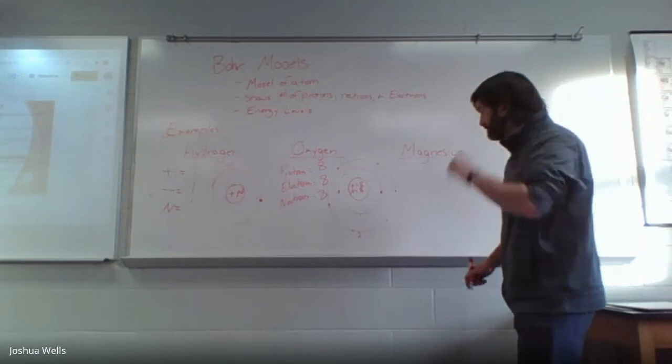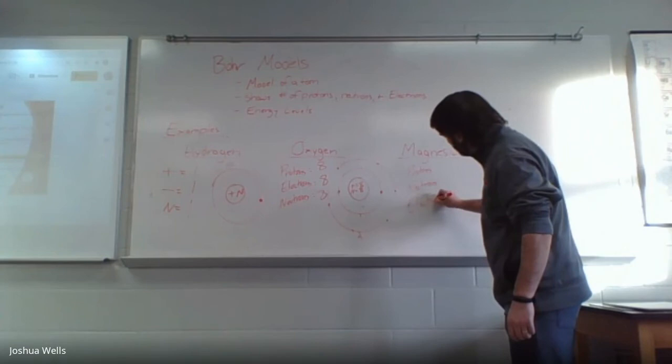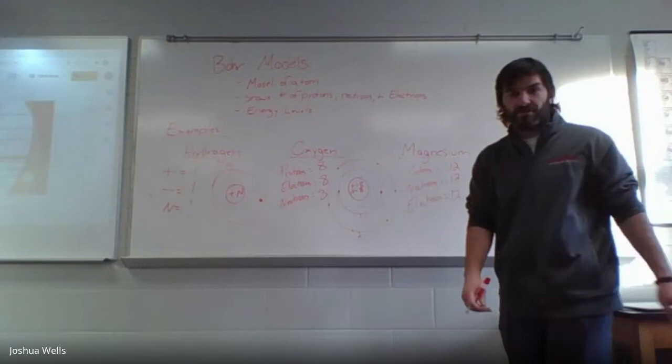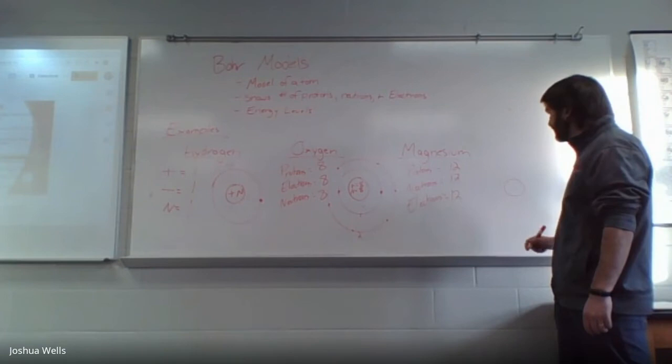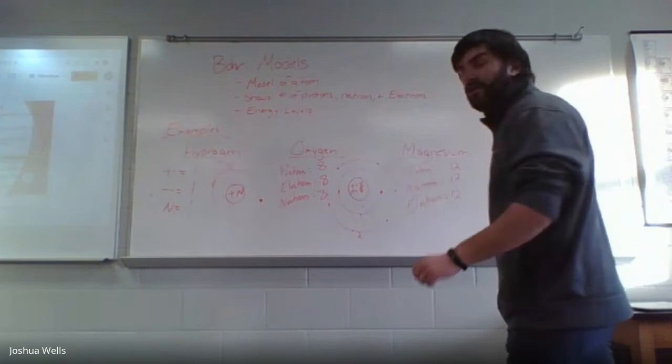We're going to do one more — magnesium. Looking at the atomic number, magnesium is atomic number 12, meaning 12 protons, 12 neutrons, and 12 electrons. Drawing our Bohr model: we have our nucleus in the center. We put a plus with 12 for protons and N with 12 for neutrons. That's our nucleus done.